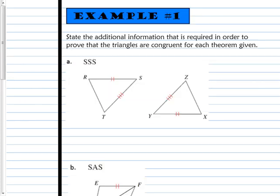Let's put it into action. Example one. State the additional information that is required in order to prove that the triangles are congruent for each theorem or postulate given. So I showed this in a worksheet today, and I'll go ahead and do A for you, and I want you to try to do B and C on your own.